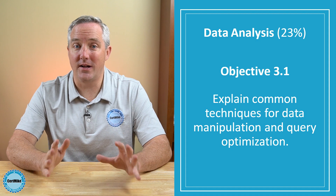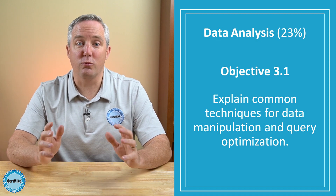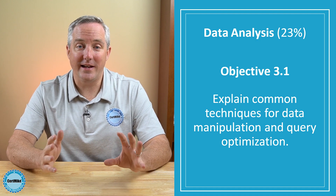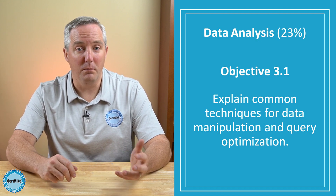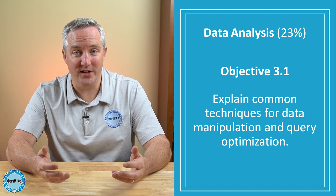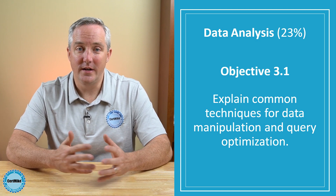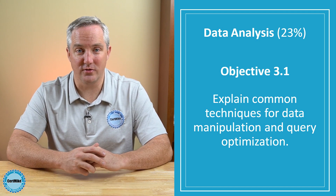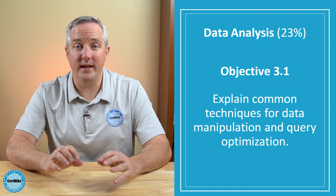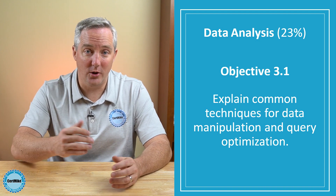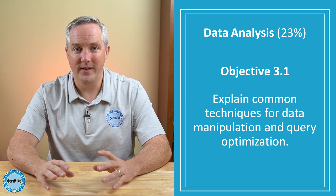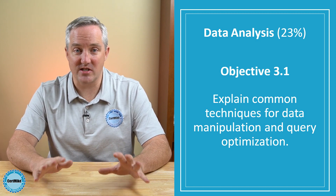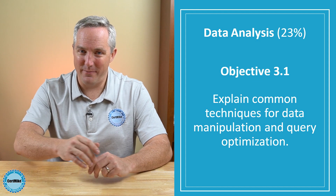This objective says 'apply,' so that means you need to be ready to do the math yourself here. You need to be able to look at a data set and calculate measures like mean, median, mode, range, variance, and standard deviation. You'll also need to perform calculations with frequencies, percentages, and confidence intervals. This is the main applied math objective on the exam, and I know it can be intimidating, but don't worry. When we get to this material in my video course and book, I'll walk you through the calculations step by step. We'll get through all that math together.